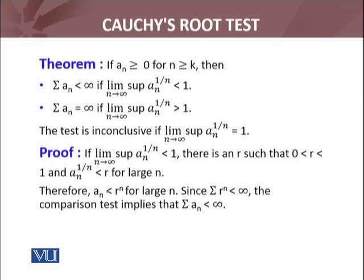Therefore, a_n less than r^n. Since summation r^n is convergent because it is a geometric series with r between 0 and 1, the comparison test implies that the series summation a_n is convergent. Now let's see the second part.